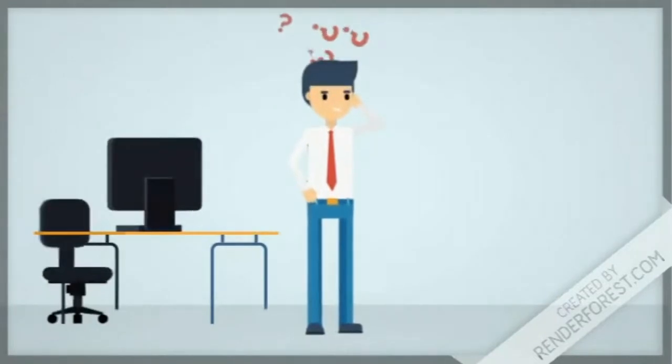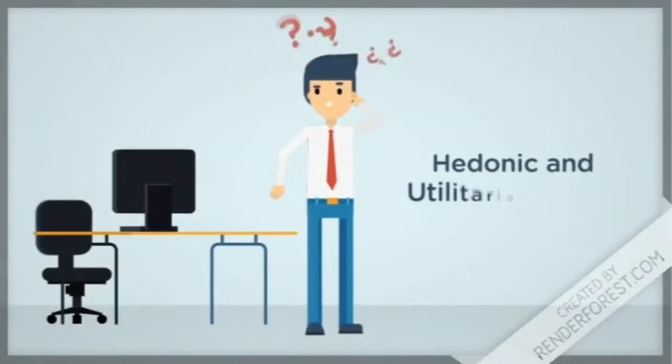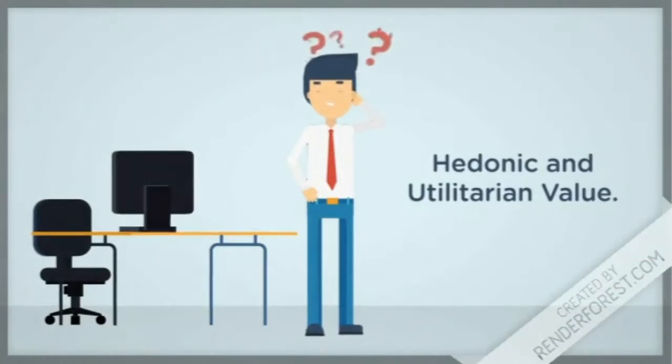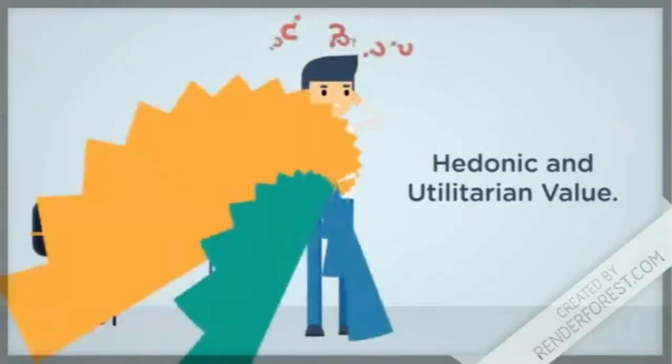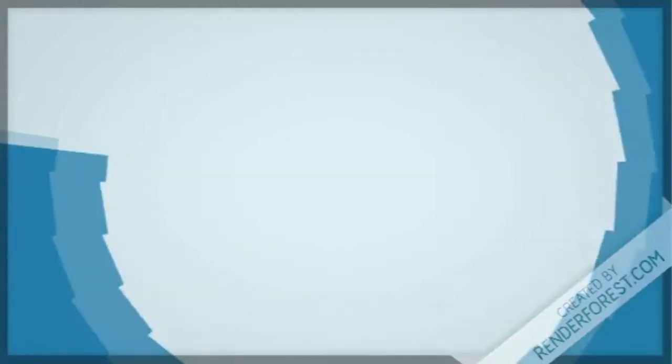In the book Affluenza: When Too Much is Never Enough, where Hamilton and Denise explore the term affluenza as an unsustainable addiction to economic growth, this statement can be linked to my personal consumption when I learned to distinguish between hedonic and utilitarian value. When my need has been a watch for the time, I could opt for something more rational and practical, but would prefer a more luxurious one while both give the same time.